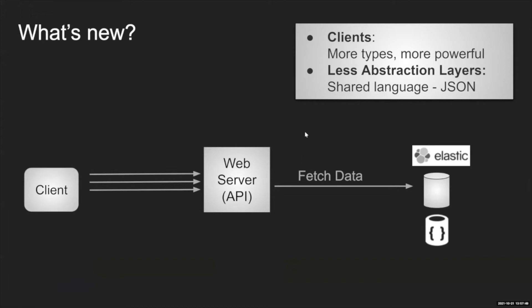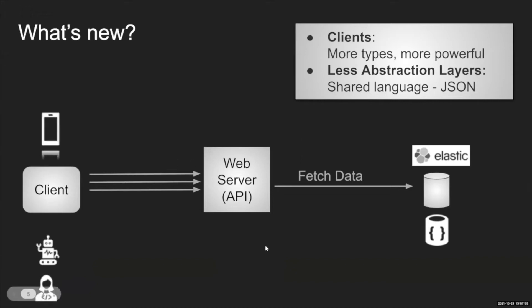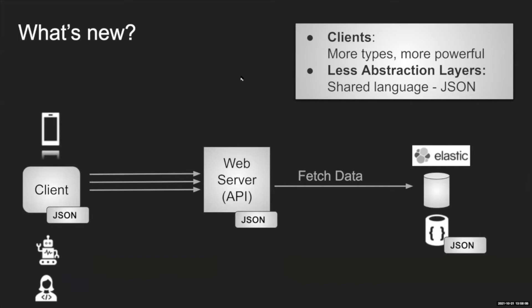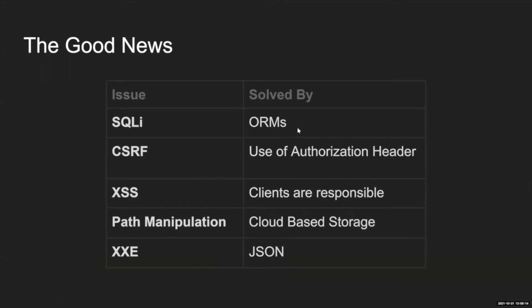A few other changes: you have more types of clients — on top of browsers you can find IoT devices, mobile, and so on — and you have more types of databases. All of them speak the same language: JSON. So the object your web application is processing might be the same object processed by the web server and even the same object stored in the database.